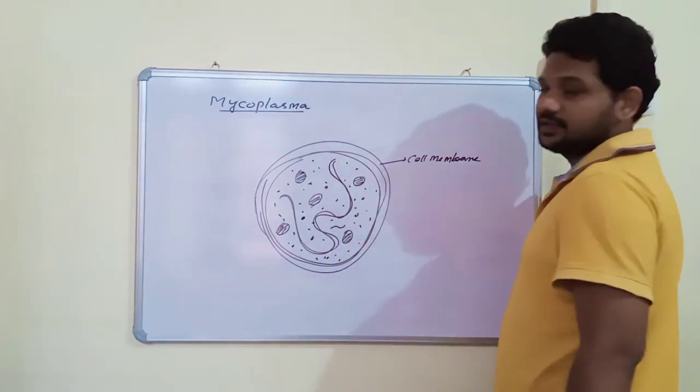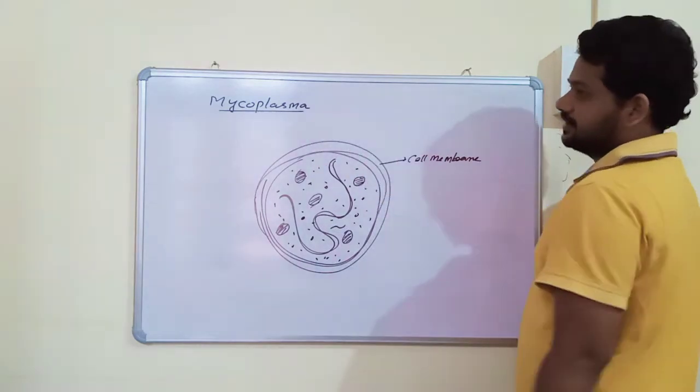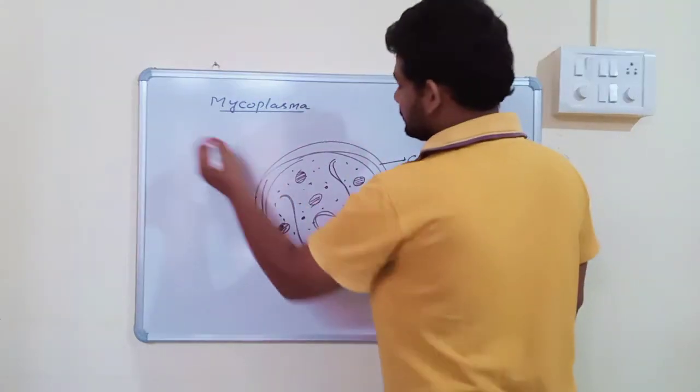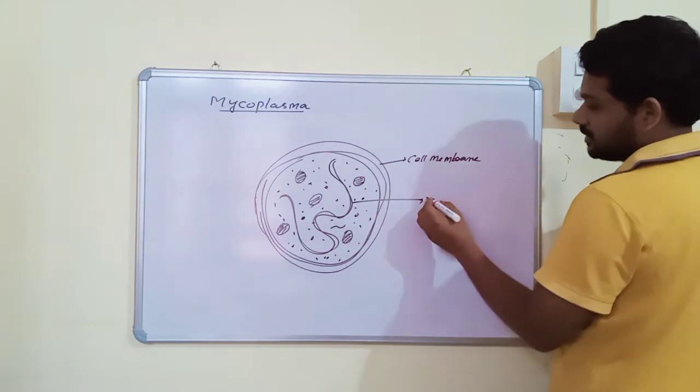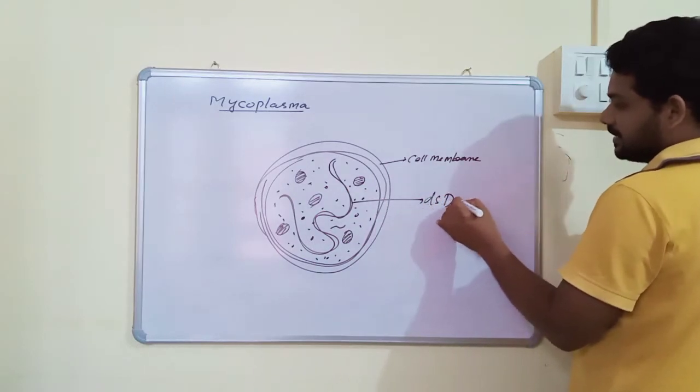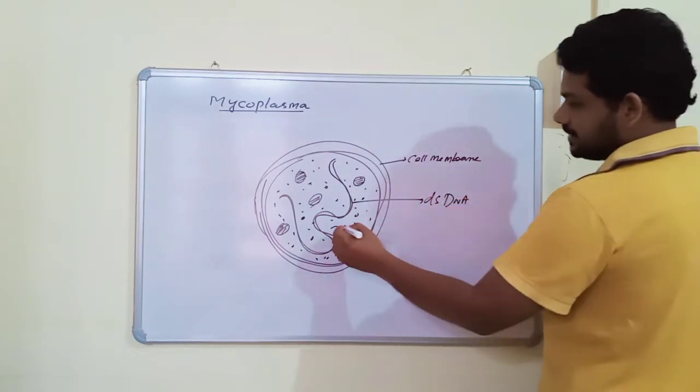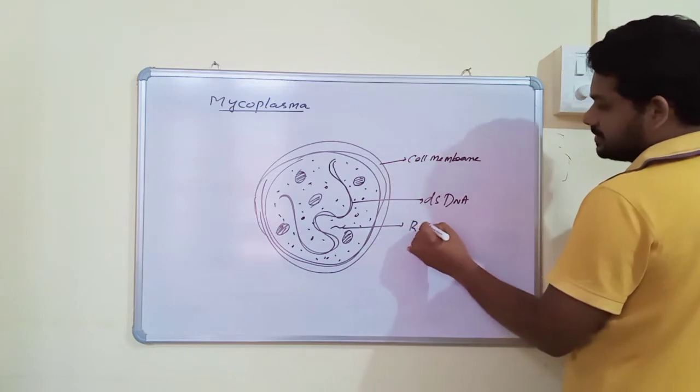Mycoplasma is also one of the important U-bacteria. The protoplasm in mycoplasma contains both DNA and RNA. DNA is double-stranded and RNA is single-stranded.